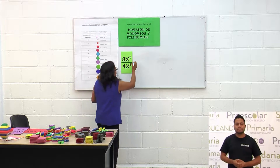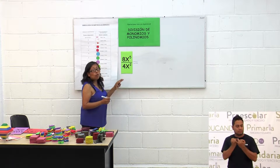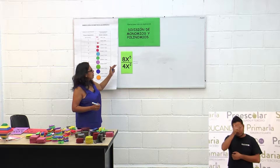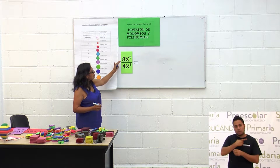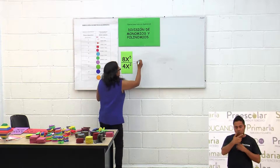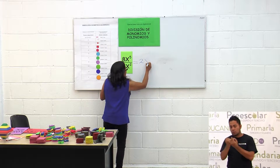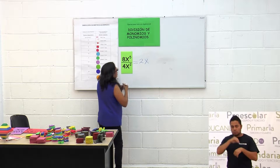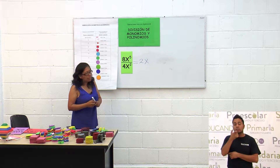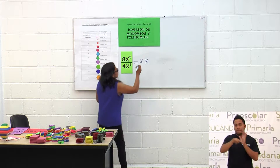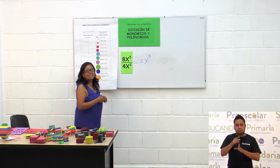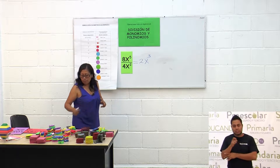Esto es igual a: recordemos que primero tenemos que dividir los coeficientes. 8 entre 4 es 2. Ponemos la x, 5 menos 2 es 3. Queda como 2x cúbica.